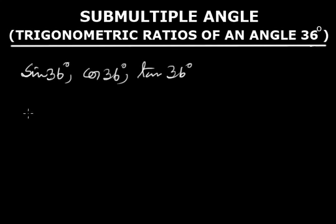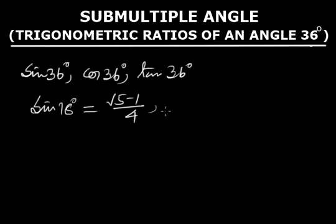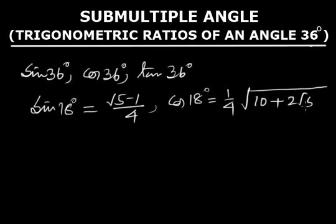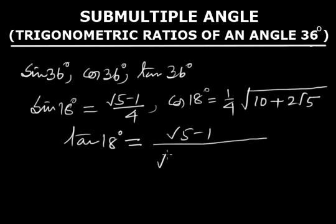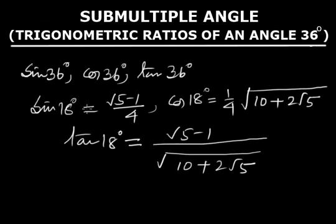We have already found the values: sin 18° = (√5 − 1)/4, cos 18° = (1/4)√(10 + 2√5), and tan 18° = (√5 − 1)/√(10 + 2√5). Now we first find the value of cos 36°.